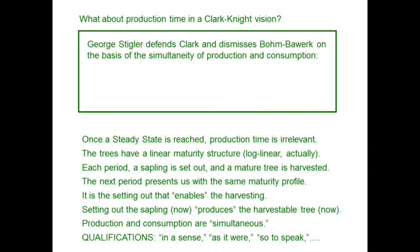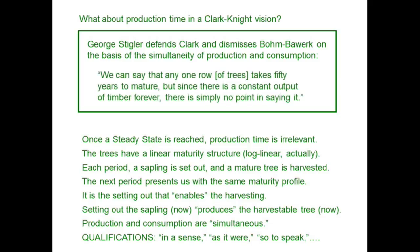Here is directly from George Stigler's 1941 book on this issue — Chicago economics defending Clark against Böhm-Bawerk. He says: 'We can say that any one row of trees takes 50 years to mature, but since there is a constant output of timber forever, there's simply no point in saying it.' That's Knightian through and through. He might as well have added: so much for Hayek.